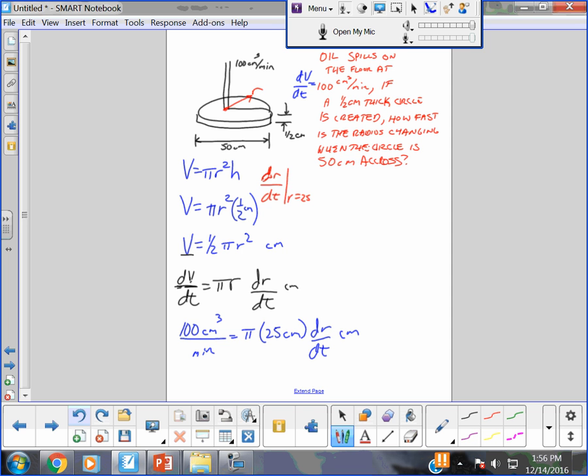Divide both sides by pi centimeters. Boom, boom. And I think you just get centimeters per minute. So now you have 25 pi dr/dt. Divide both sides by 25 pi.